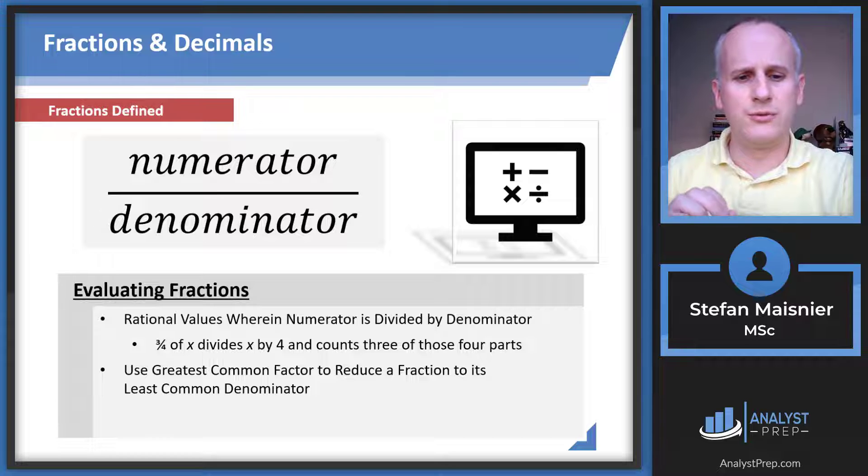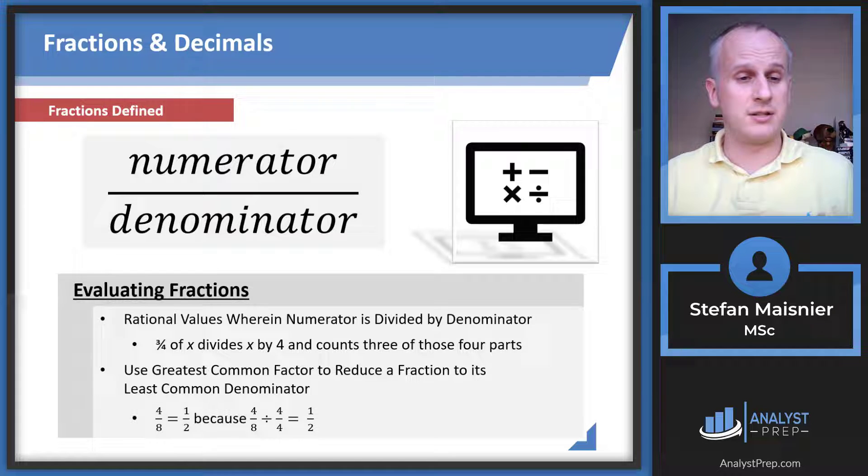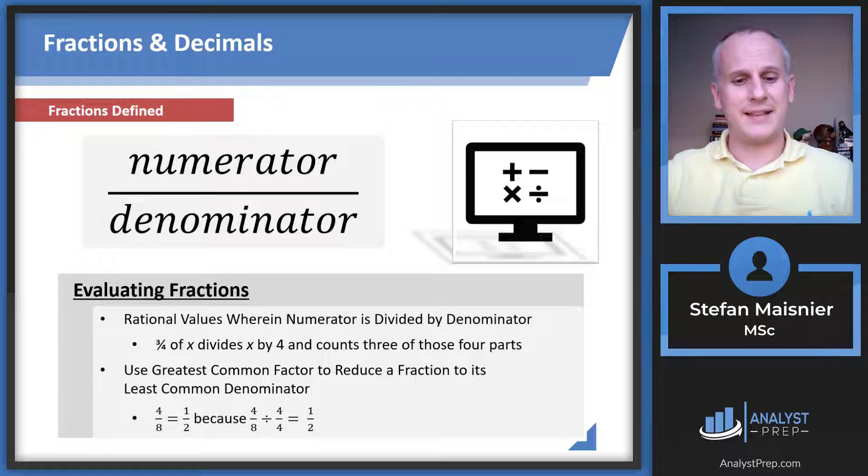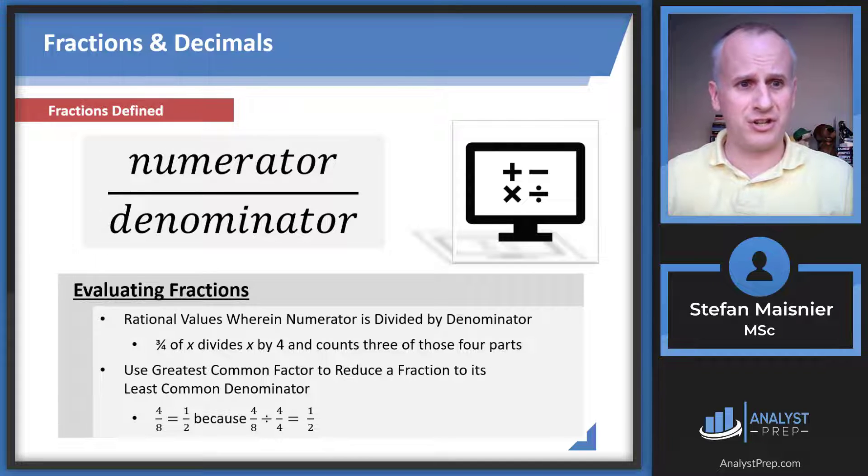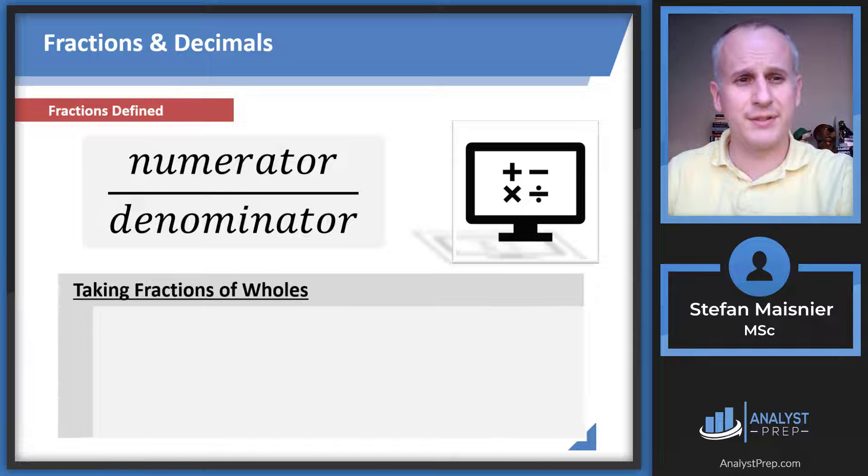You can always use your greatest common factor to reduce a fraction to what is known as its least common denominator. So four eighths is going to equal one half because you can divide the fraction four eighths by four over four as one to produce one half. That's how you can reduce your fractions by canceling out.